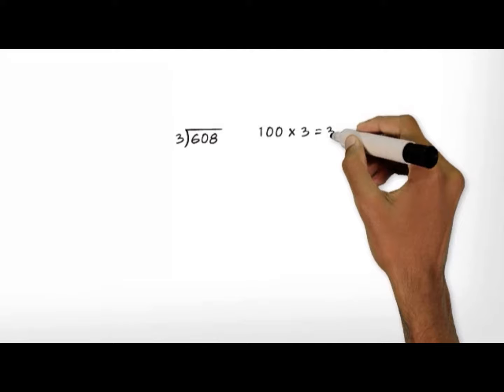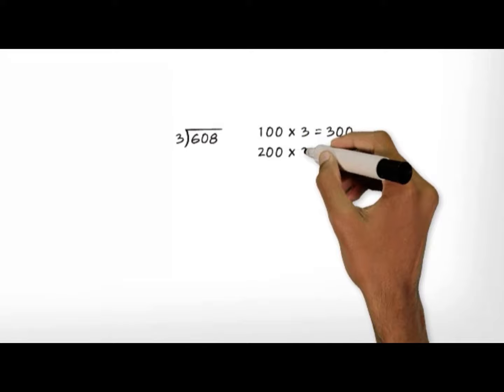We think, what multiple of 100 times 3 is close to 608? 100 times 3 equals 300, which is less than 608. 200 times 3 equals 600, which is less than 608.